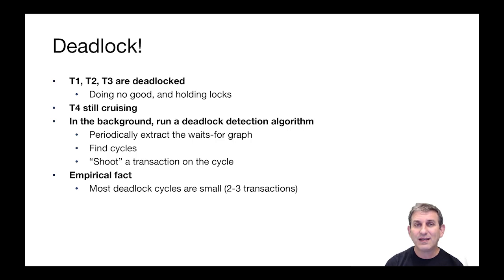In systems that do deadlock detection, they periodically in the background extract the waits-for graph from the lock table, find cycles, and they shoot a transaction on the cycle, which is to say they abort one of those transactions on the cycle. You could abort the oldest transaction or use some sort of priority scheme to choose whom to abort.